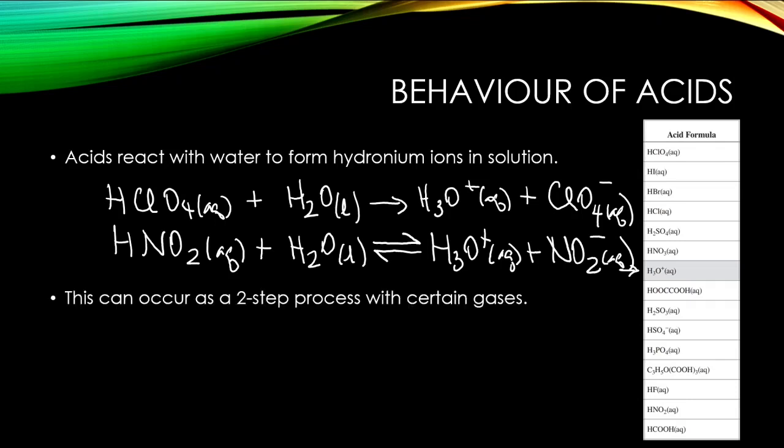A consideration to make is that certain gases can also create acids, but they need to go through a two-step process. The gases in particular that are responsible for this are carbon dioxide, sulfur dioxide, sulfur trioxide, and we also consider the NOx gases to do this in part, but those reactions are a bit clumsy, so I'm not going to include that as part of this.